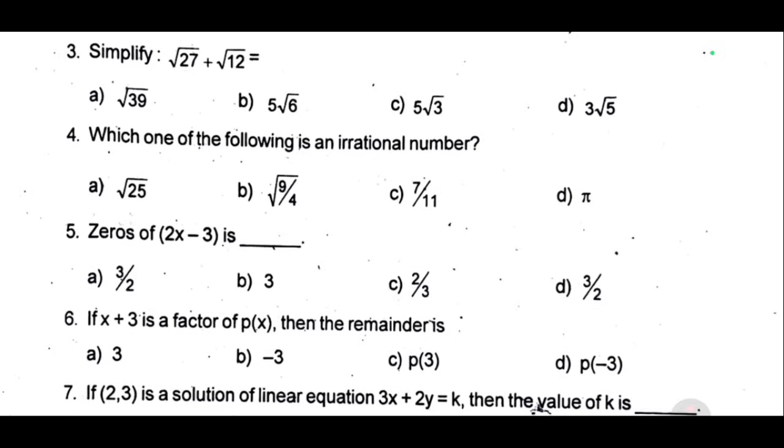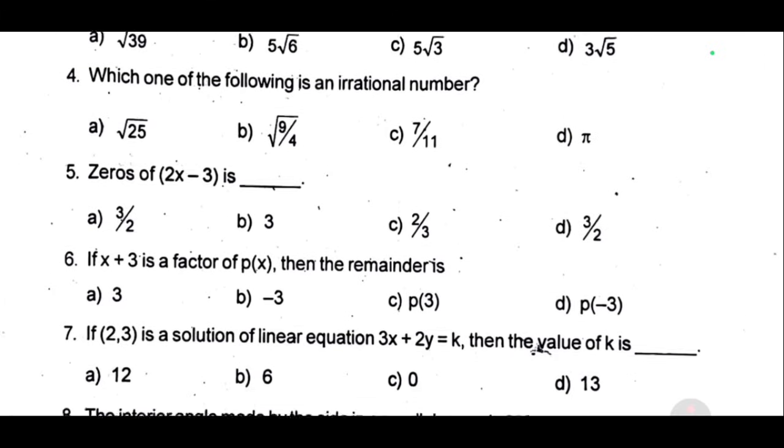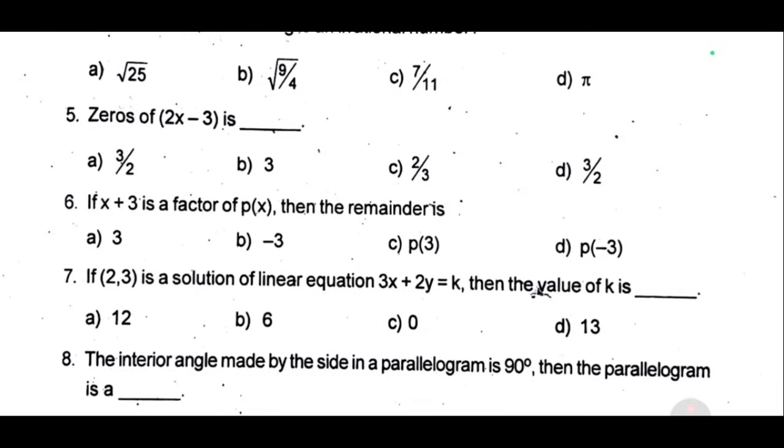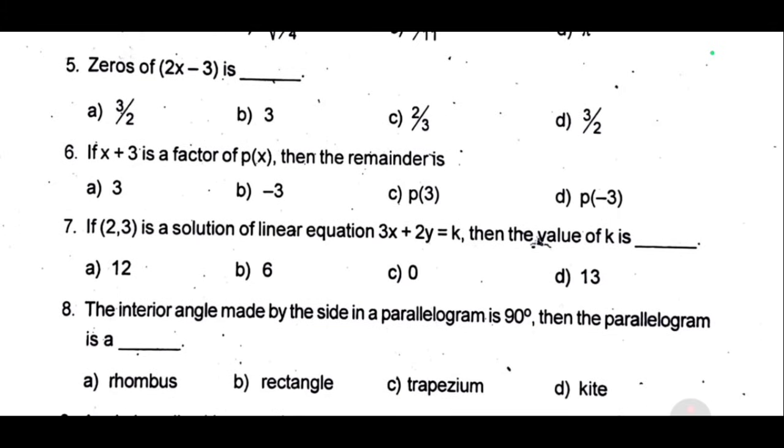Fifth one, zeros of 2x minus 3 is dash. Sixth one, if x plus 3 is a factor of p of x, then the remainder is dash. Seventh one, if 2 comma 3 is a solution of linear equation 3x plus 2y equal to k, then the value of k is dash.